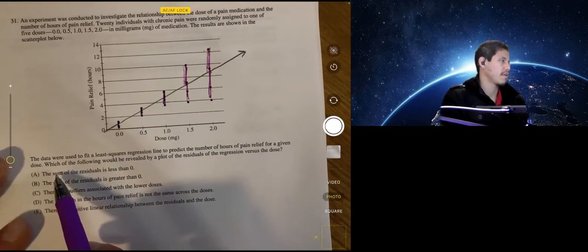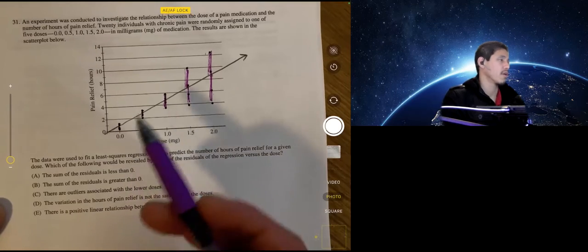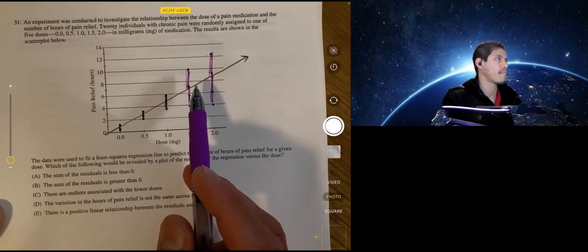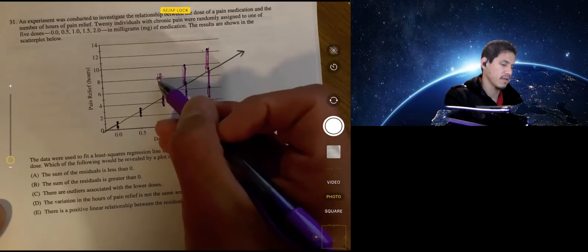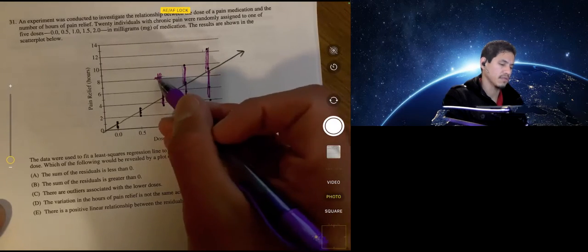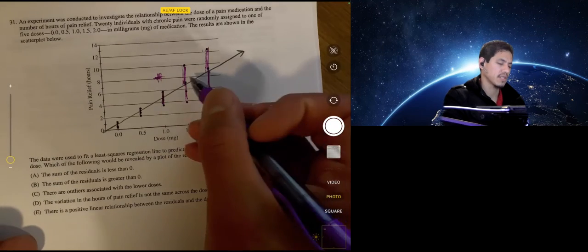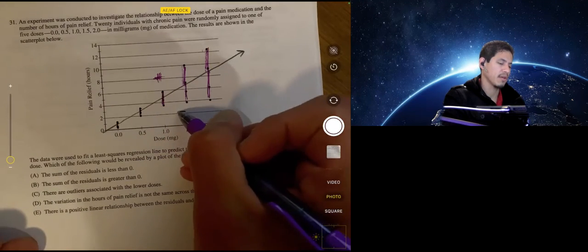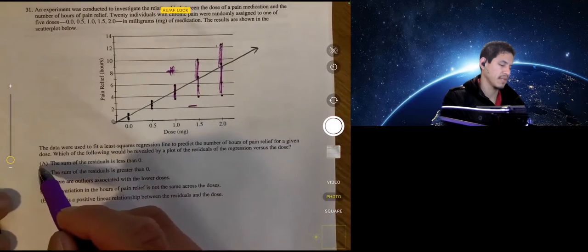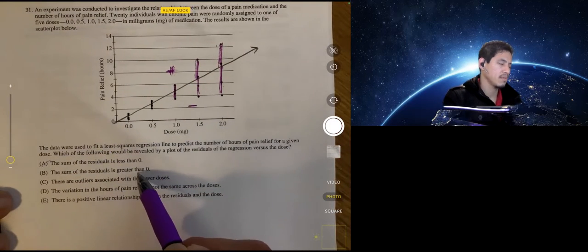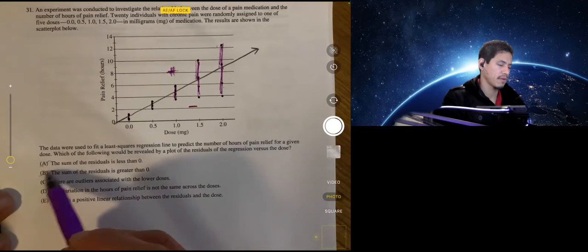So part A, or answer A, some of the residuals are less than zero. We don't know. It could be. We have some positive. Remember, if it's above the graph, these are positive values. These are overestimations. Or I mean, these values are greater than what the least squares regression line estimates. Below here, they would be negative. So we don't know if the negative values outweigh the positive. It could be this, but we can't say that for sure. B, the sum of the residuals is greater than zero. Same idea. We don't know that either.